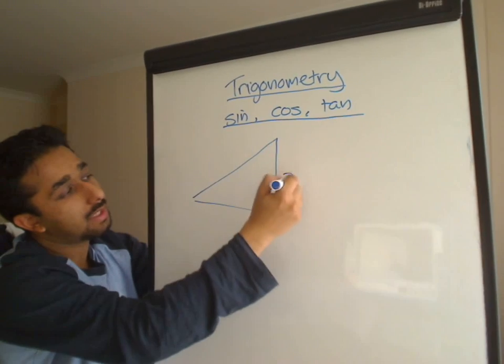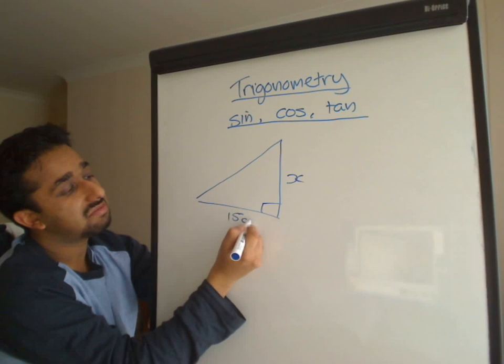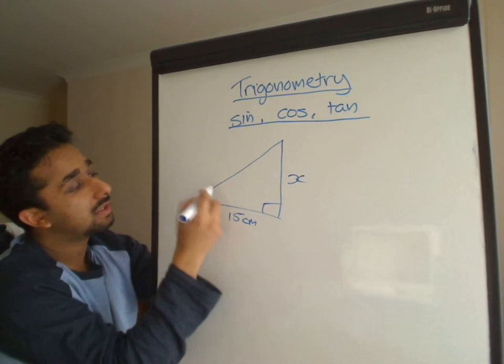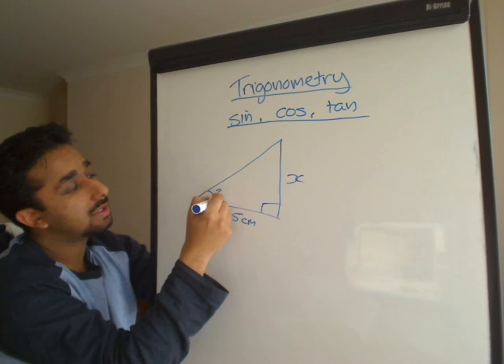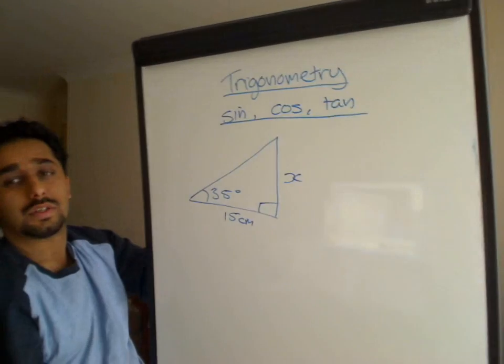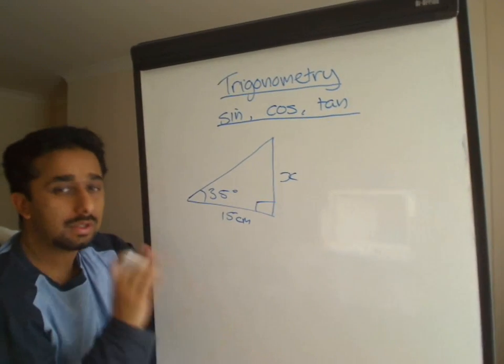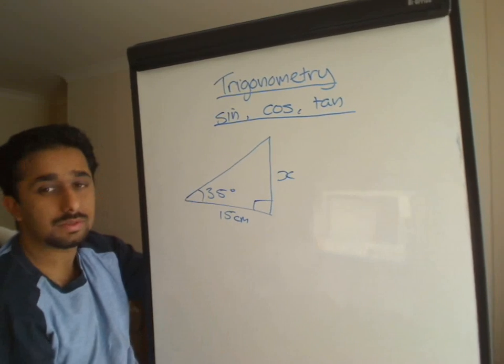We're going to work out length x. This is about 15 centimeters and this angle is 35 degrees. Nice and random. So first of all, we've got to decide is it sine, cos or tan we're going to use.